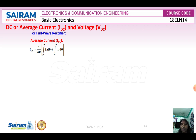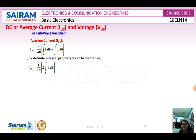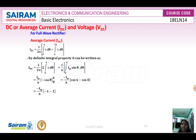For the full wave rectifier IDC calculation, to avoid tedious derivations, we apply an integral property: IDC equals 1/(2π) times 2 times the integral from 0 to π of I·dθ. Substituting and applying upper and lower limits, we get IDC equals 2Im/π. For the half wave rectifier we got Im/π since it conducts only for one cycle, whereas the full wave rectifier conducts for two cycles, giving double the value.